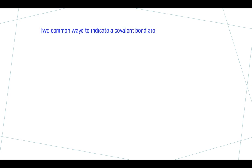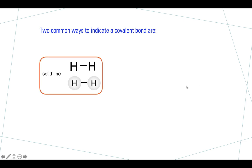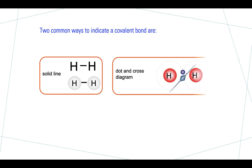There are two ways on paper to indicate that a covalent bond is present. The first way is by a solid line — between two hydrogen atoms, whether drawn as a capital H or within a circle, the solid line represents a covalent bond. The other way is via a dot and cross diagram, and that is what we are going to be revising today.